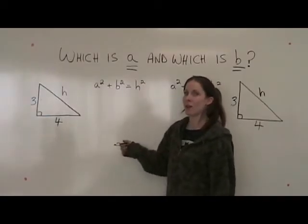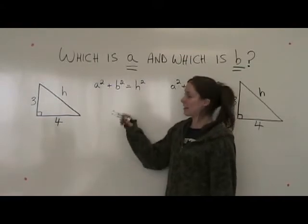When we're discussing Pythagorean Theorem, how do we know which side is A and which side is B?